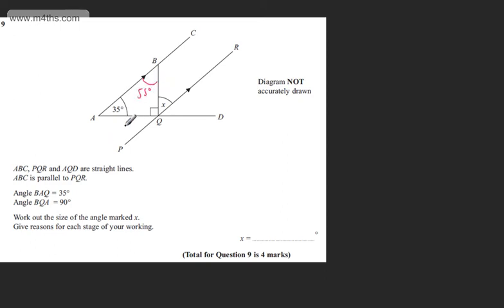So we're asked now to give a reason. What I'm going to state here now is that angle, and I'm going to use the notation for angle, we can say that angle ABQ will be equal to 55 degrees. So that is my first statement here.